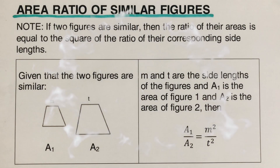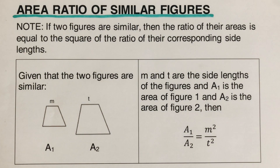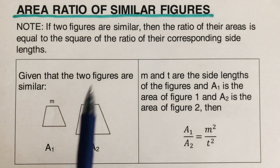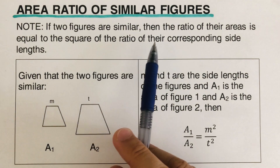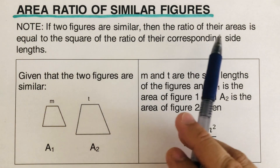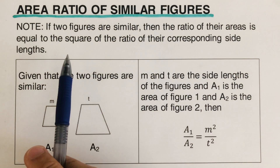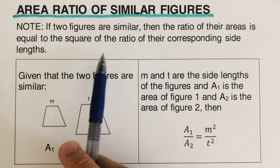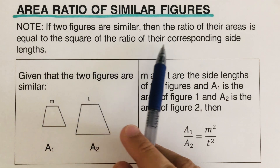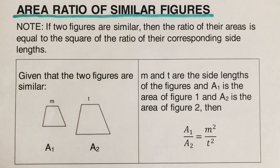Hello everyone, today we're going to cover the area ratio of similar figures. I put a little note over here: if two figures are similar, then the ratio of their areas is equal to the square of the ratio of their corresponding side lengths.